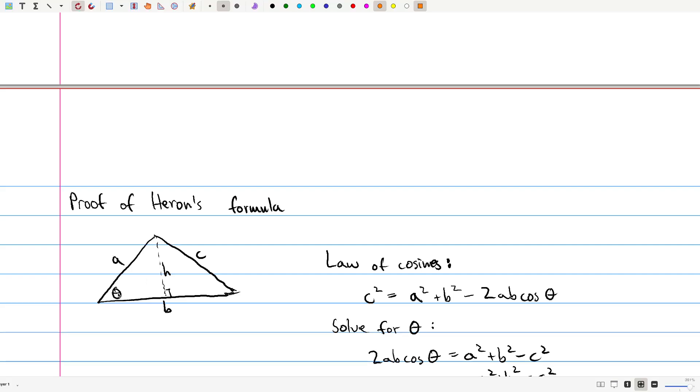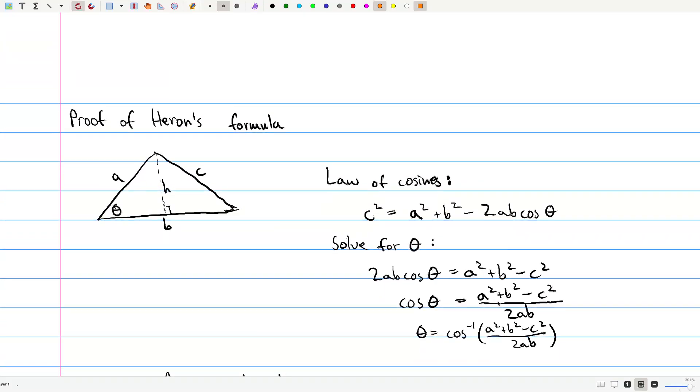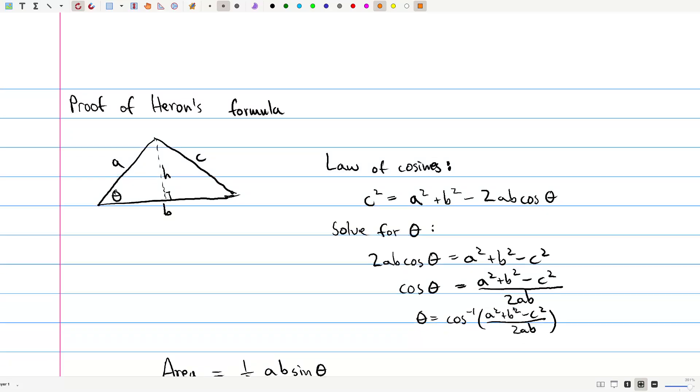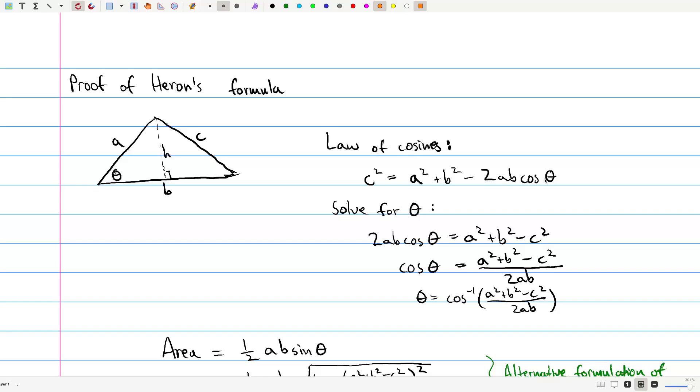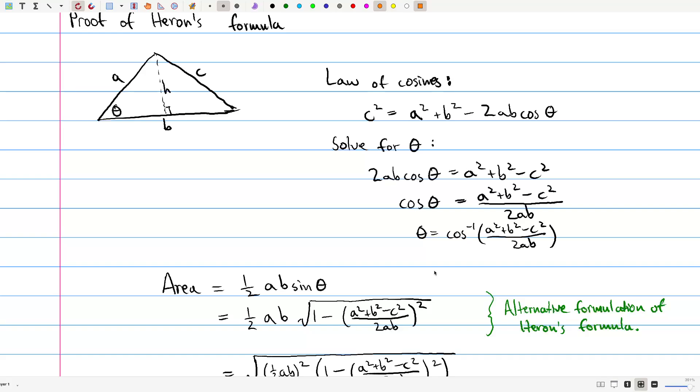So first of all, law of cosines. C squared is a squared plus b squared minus 2ab cosine theta. We can go through the algebra to solve for theta. So to say what we did, we added 2ab cosine theta to both sides. And then we subtract c squared from both sides. Then we divide by 2ab on both sides. And then we take cosine inverse of both sides, which we can do because it's just a property of cosine inverse for this particular application of triangles.